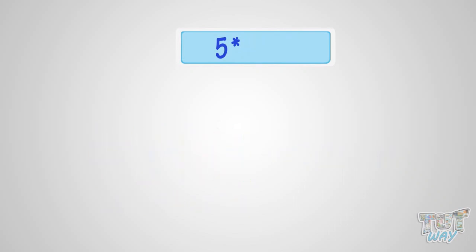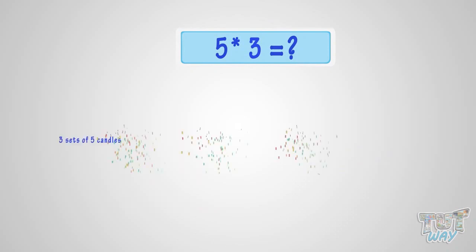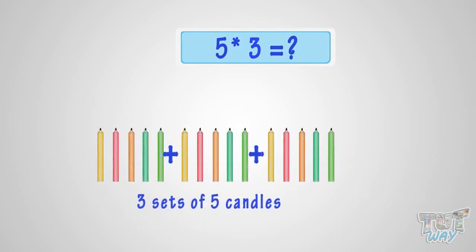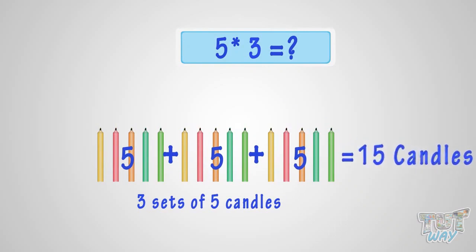What is 5 multiplied with 3? It is the same as three sets of 5 candles. 5 plus 5 plus 5 equals 15. So, it is 15 candles. That is, 5 multiplied by 3 is 15.